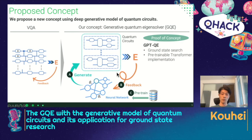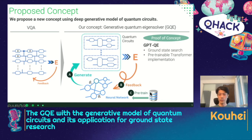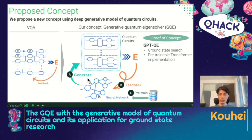In the rest of the talk, I will talk about GPTQE in detail. Specifically, I will talk about how neural networks generate quantum circuits, and how we calculate the feedback to the neural network. And also, because GPTQE has a function of pre-training, I will also talk about how we pre-train the neural network. So first, let me talk about how neural networks generate quantum circuits.